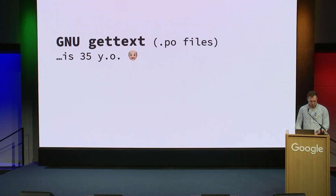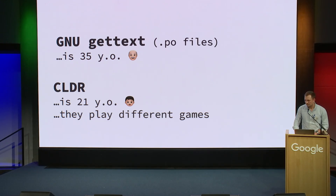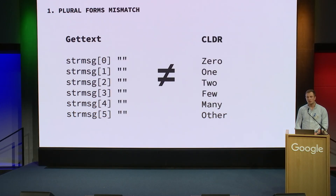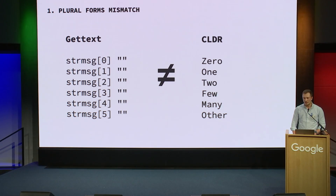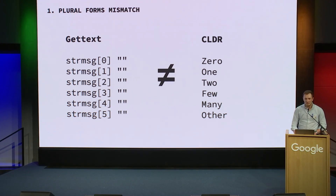I discovered a little later — which was Monday, I guess — that GNU gettext is a pretty old format. It's still alive and well, but it's 35 years old, and CLDR is just 21 years old, and they play different games. The plural forms mostly match, but not completely. For some languages they don't. CLDR for Ukrainian defines four forms; GNU gettext only three. So there's a clear mismatch, and once I started to debug a translation bug I had, I realized it's unfixable because there are fundamental mismatches between the formats.